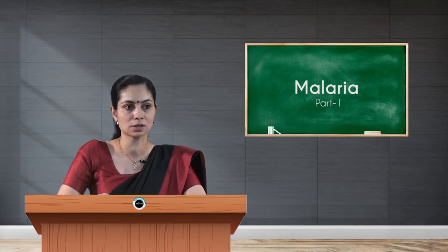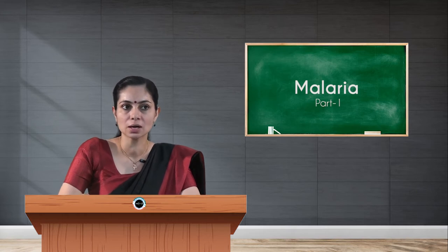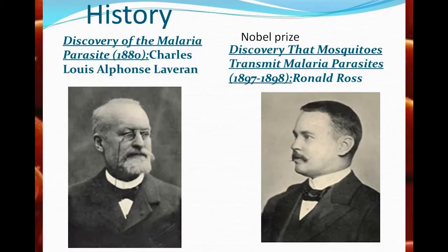Human beings are the definitive intermediate host. Looking at the history, the discovery of the malarial parasite was done by Charles Louis Alphonse Laveran, and the discovery that mosquitoes transmit the malarial parasite was by Ronald Ross. Both of them received the Nobel Prize for their discoveries.